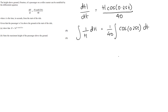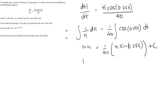The integral of 1/h dh gives ln h. On the right, 1/40 times the integral of cos(0.25t): cosine integrates to sine, and because differentiating sin(0.25t) brings out 0.25, we counteract that by multiplying by 4, giving (1/40) times 4·sin(0.25t). Tidying up: ln h = (1/10)·sin(0.25t) + c.